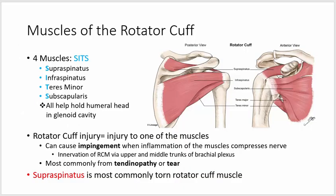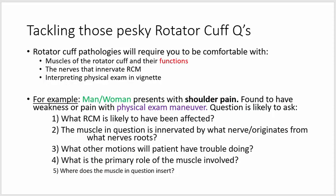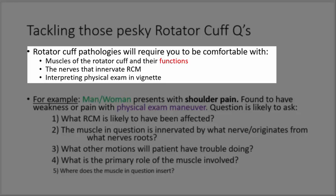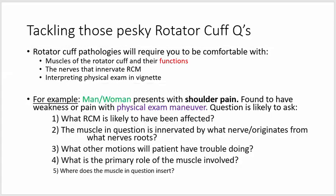When we talk about rotator cuff injuries, we're specifically talking about injury to one of those four muscles. Something to be familiar with is the term impingement — this refers to pain secondary to nerve involvement when the rotator cuff is inflamed. For Step 1, knowing the nitty-gritty details of where the muscles originate and insert is fairly low yield. What you need to focus on is the function of the rotator cuff muscles, the nerves responsible for their innervation, and being able to interpret physical exam findings to isolate the muscle involved.